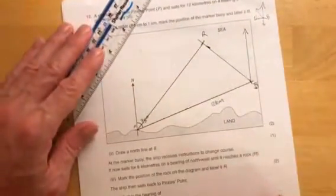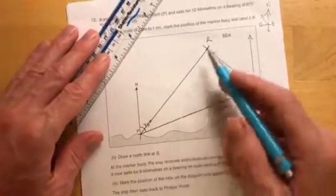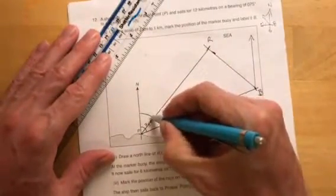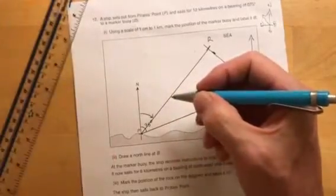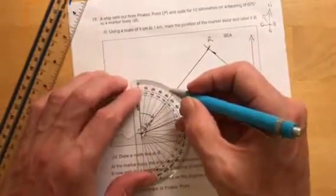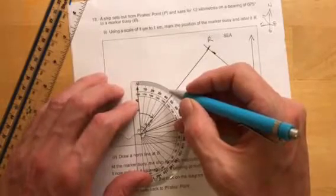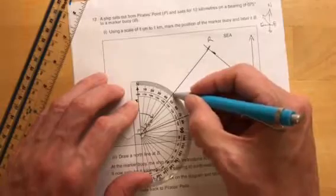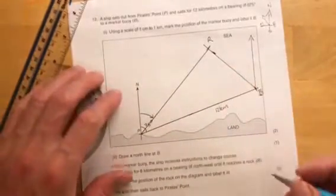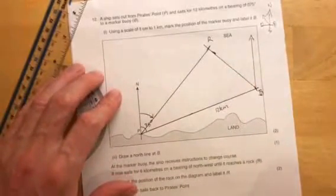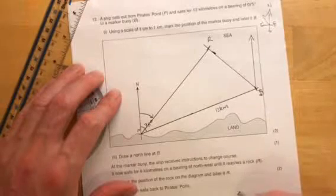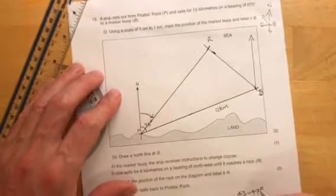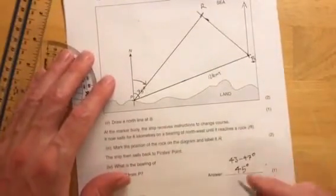What is the bearing of R from P? R from P, from P, so that's that angle there. That would be 45 degrees, almost exactly 45 degrees. Will give you 43 to 47 degrees.